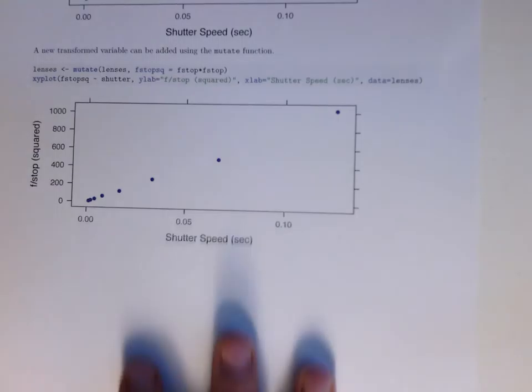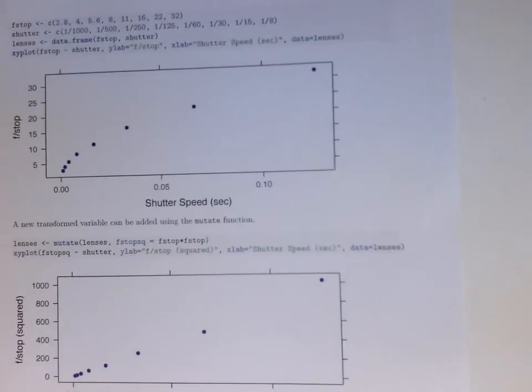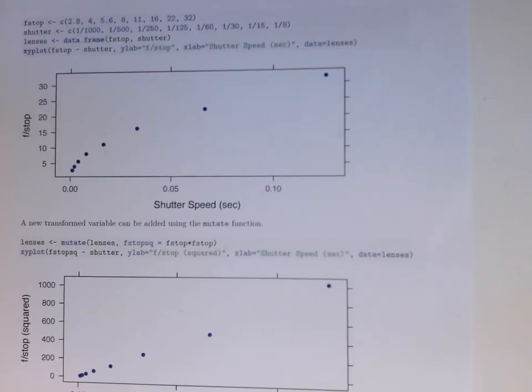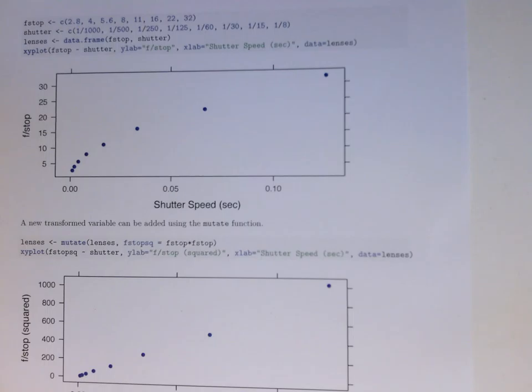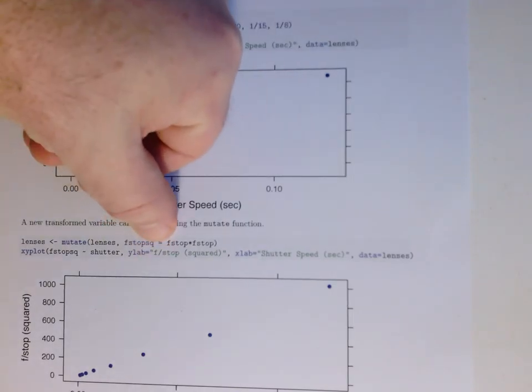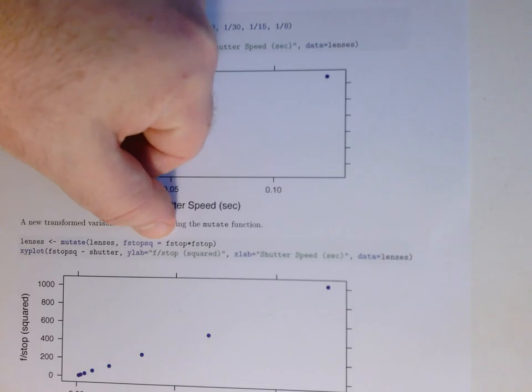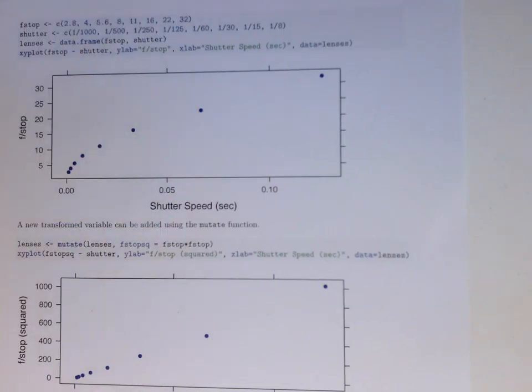Straightening scatterplots, as I said, there'll be an example of this. We start off with something like this for the f-stops example. And then if we use a transformation here, in fact, we're using the mutate function to generate the square of f-stop as one of the ladder of powers. And that actually gives us a relationship that's remarkably linear.